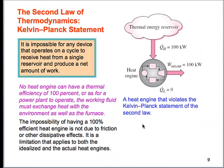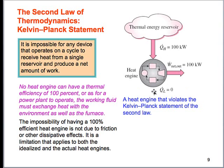That brings us to the Kelvin-Planck statement: it is impossible for any device to operate in a cycle, receive heat from a single source, and produce a net amount of work. Something that gets 100 kilowatts of energy from a high-temperature source and uses all of it would violate the Kelvin-Planck statement — we have to expel some of it in order to operate in our cycle. Interestingly, this inability to use all of the work has nothing to do with friction or other losses; it has to do with the nature of this system.